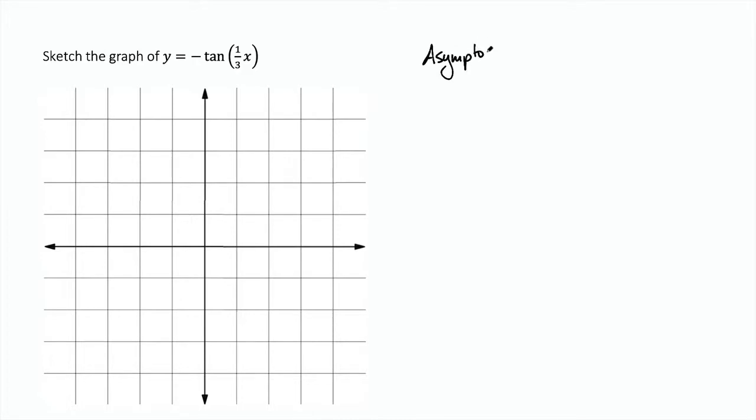Our asymptotes we find by taking the input of the tangent, the inside of those parentheses, and we set it equal to negative pi over 2 and positive pi over 2. Those will give us asymptotes.